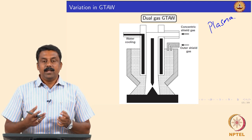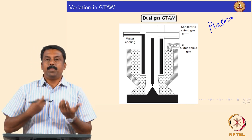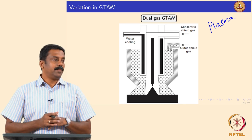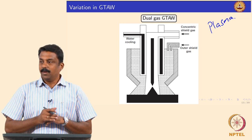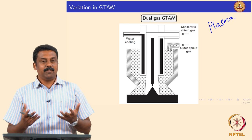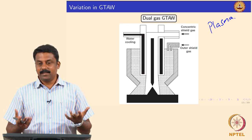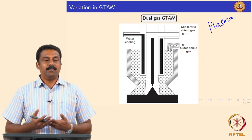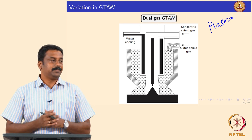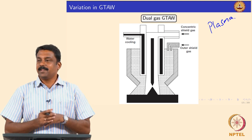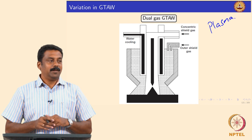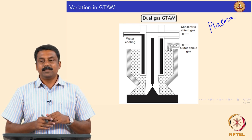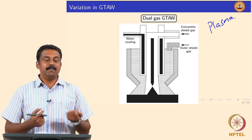Another way is to carefully manipulate the heat transfer characteristics of the arc. Heat transfer in arc is carried out by three ways: conduction, convection, and radiation. Conduction and radiation we cannot do anything about, but we can manipulate the convective heat transfer.